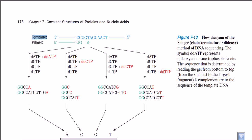In all four test tubes we use polymerase and the necessary normal nucleotide triphosphates for replication. What differs across the four test tubes is that each one contains a separate type of dideoxy nucleotide triphosphate.